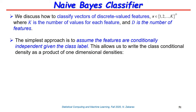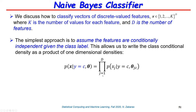We are going to make a very strong assumption, built into the equation shown here. Given the class labels, if we knew to what class the point x belongs, then the conditional distribution factorizes over features. This is exactly what we call a Naive Bayes classifier: if we knew the class, we can factorize the conditional distribution of x given y as a product from j=1 to D.